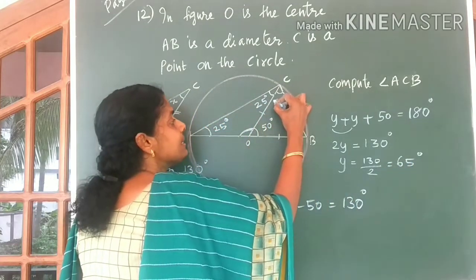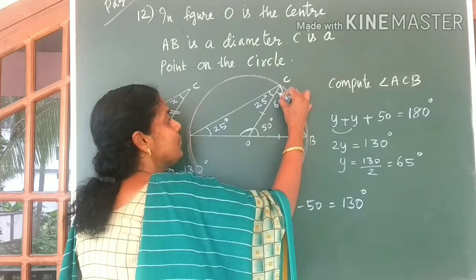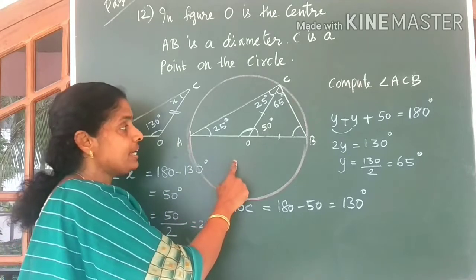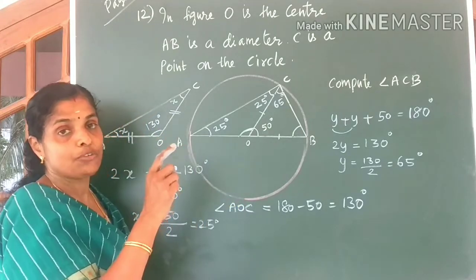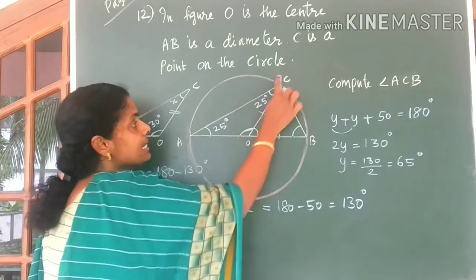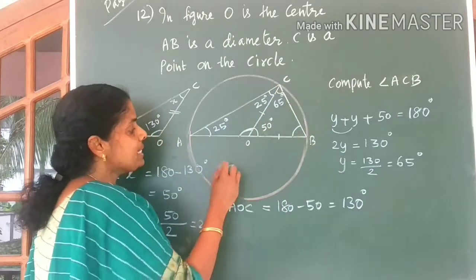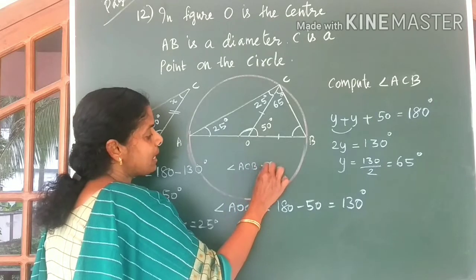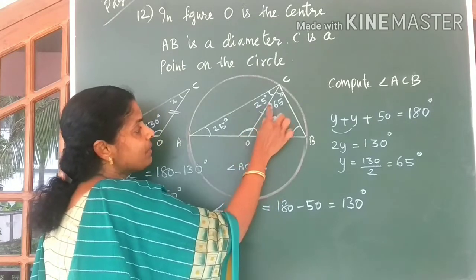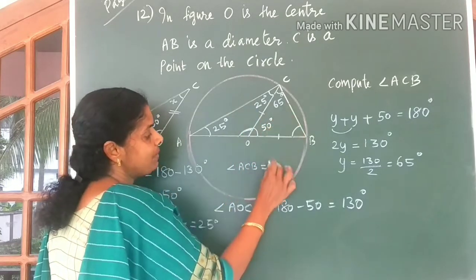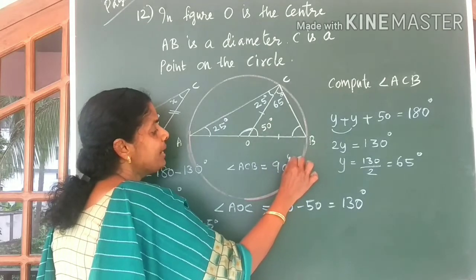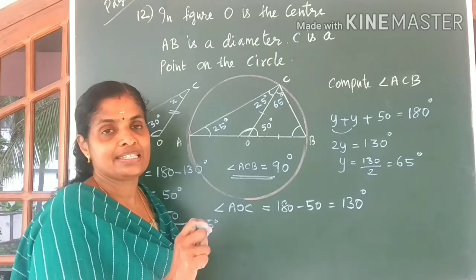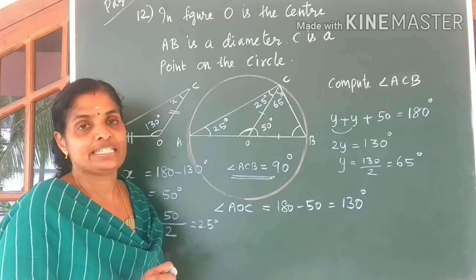So you can say this angle to be equal to 65 degrees. Do you understand? Now the question here is you are asked to find angle ACB. So what is angle ACB? Angle ACB is equal to 25 plus 65, which is equal to 90 degrees. Angle ACB is equal to 90 degrees is the answer for the question.